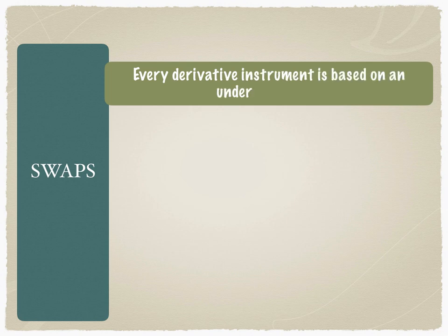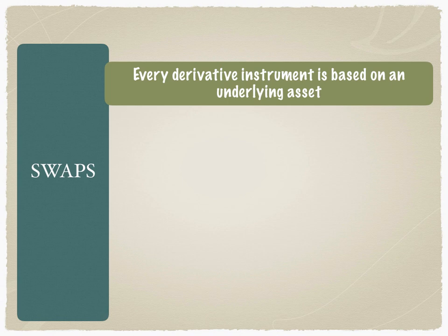Let's understand what swaps are. Swaps are a derivative product that is customized to the requirements of the two counterparties, and therefore one of the most essential features of a swap is that, like all derivatives, it is based on an underlying asset. The technical definition of a derivative is that it is a financial product whose price is derived from the price of the underlying asset. In the same way, a swap is also a derivative instrument based on an underlying asset.